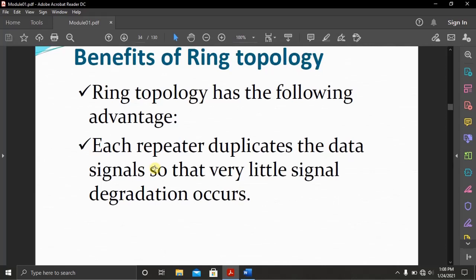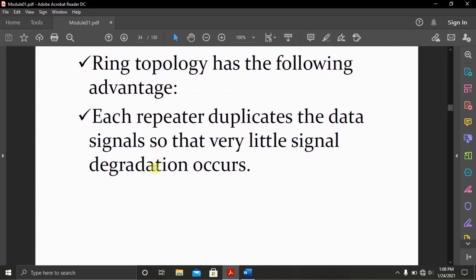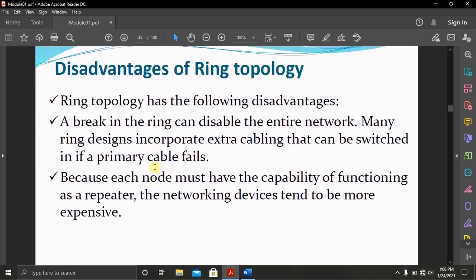Benefits of ring topology: ring topology has the following advantages. Each repeater duplicates the data signal so that very little signal degradation occurs. Each node or each individual computer receives the data and amplifies that signal so that very little degradation or loss of information occurs as the data is being transmitted.